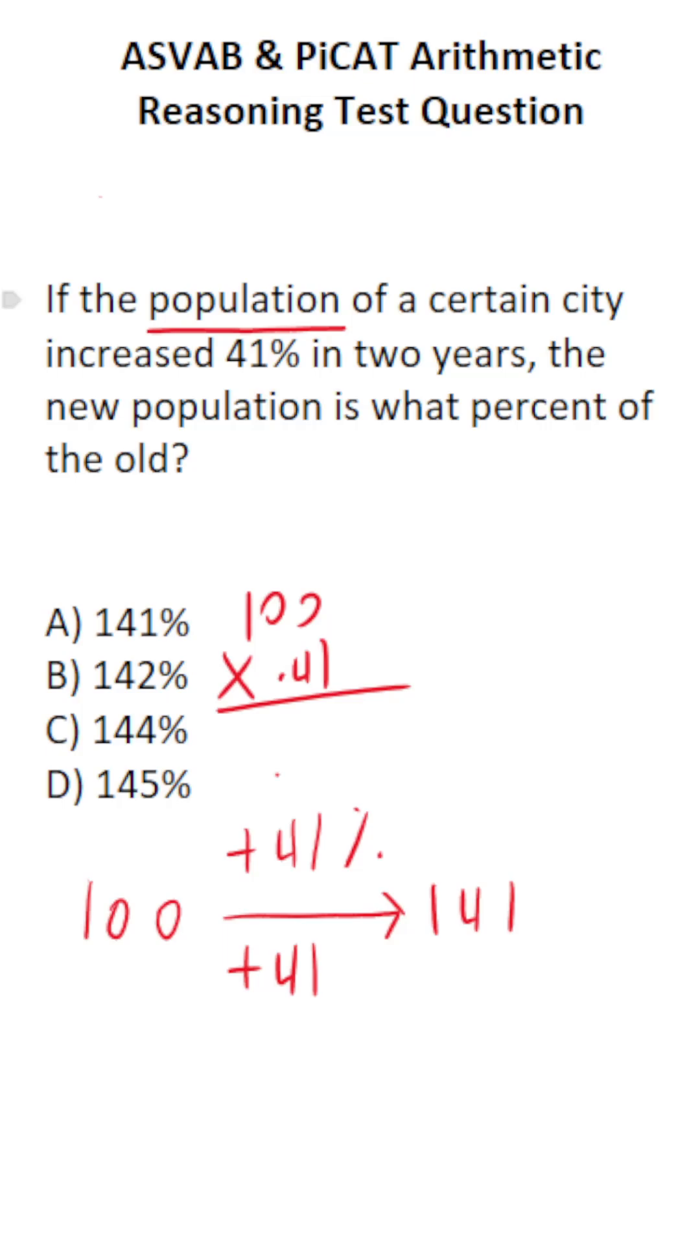Now let's look at the second part of this problem. The new population is what percent of the old? Well, its new population is 141. To convert this to percent, we're going to divide it by its old population, which is 100.